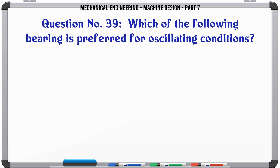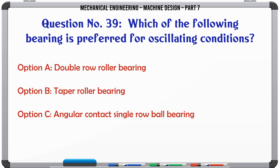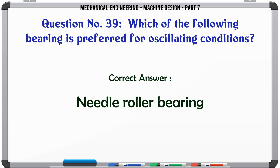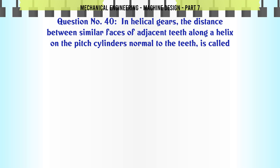Which of the following bearing is preferred for oscillating conditions? a) Double row roller bearing, b) taper roller bearing, c) angular contact single row ball bearing, d) needle roller bearing. The correct answer is: needle roller bearing.